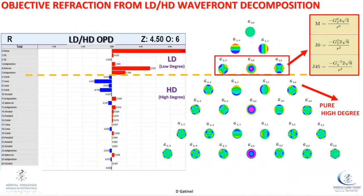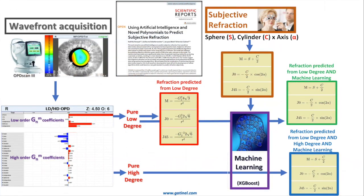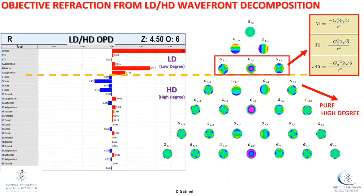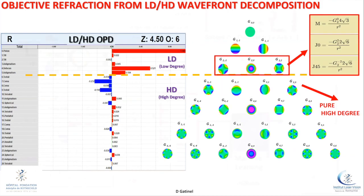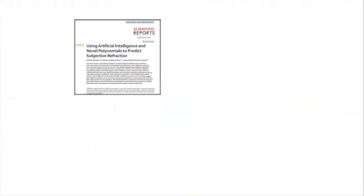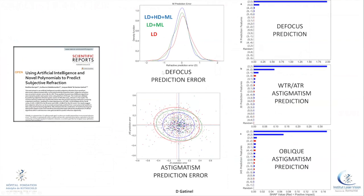In a paper published in Scientific Reports, using artificial intelligence combined with the new classification, we can improve prediction of subjective refraction. What's very interesting is that you can now see the importance of features that influence refraction: spherical aberration influences the prediction of defocus, coma and trefoil influence with-the-rule or against-the-rule astigmatism, and other modes influence oblique astigmatism. Now you are sure these are really higher order aberrations, not a mixture of hidden low order aberrations coded in the higher order ones.